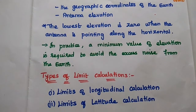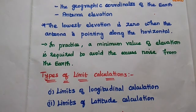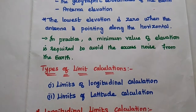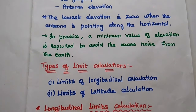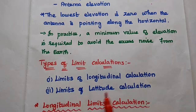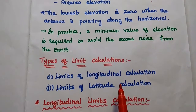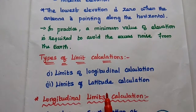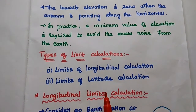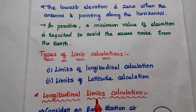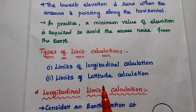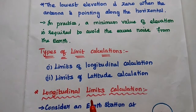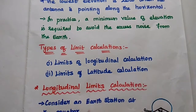Next, we are going to analyze the limit calculations. There are two types: one is the limits of longitudinal calculation, and the next one is the limits of latitude calculation. So the limits can be set by both longitudinal as well as latitude values.